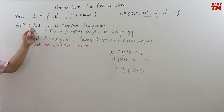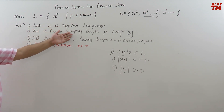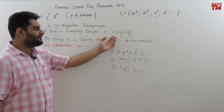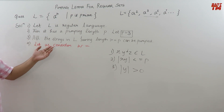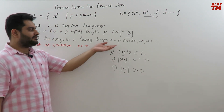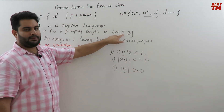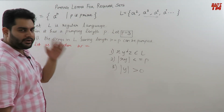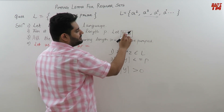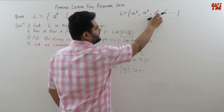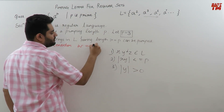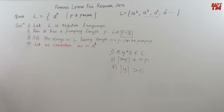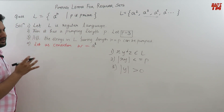The first point is we assume that L is a regular language. If it is regular, it will have a pumping length — we assume the pumping length to be 3 this time. Third point: all strings in language L that have length greater than or equal to this pumping length can be pumped. So strings of length 3 or more — a cubed, a^5, a^7 — can be pumped. Let us consider one string W = a cubed and check if it can be pumped.